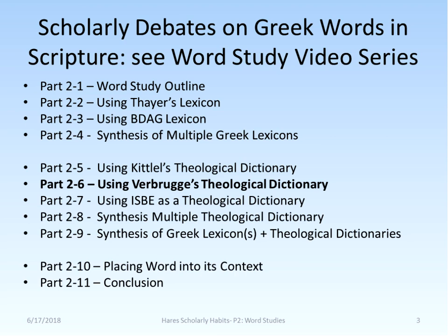We are now in a second part, which is looking at theological dictionaries. Theological dictionaries start with the information found in lexicons and go a little deeper. They provide additional information on the definitions, they look at culture, they look at history, and they look at how the word was used in the New Testament. Today we are looking at Verbrugge's New International Dictionary of New Testament Theology.